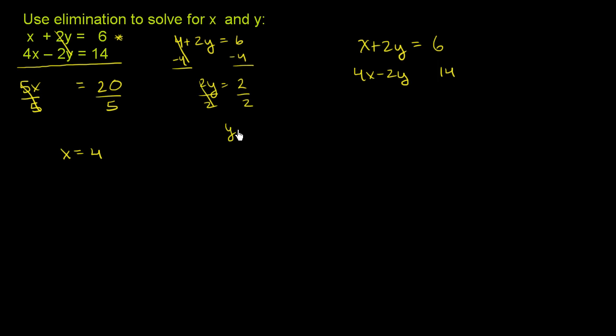We get y is equal to 1. So the solution, the x's and y's that satisfy both of these equations are x is equal to 4 and y is equal to 1. So this is the solution for this system, or this coordinate would be the point of intersection of these two lines.